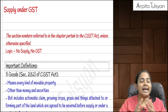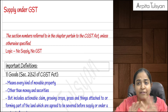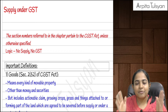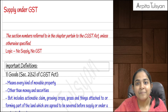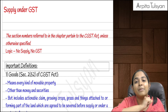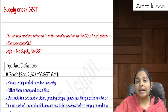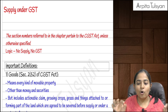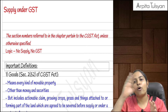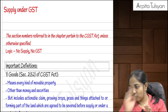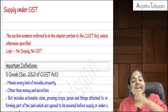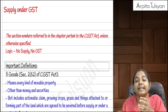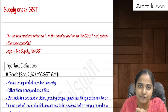Keep one small logic in mind: if a particular transaction is not a supply, then there will be no GST liability applicable on it. Not being a supply is different from getting exempted. First we have to see whether it is a supply or not. If it is not a supply, no GST applies. If it is a supply, it can either be a taxable supply or there can be an exemption notification for the same.